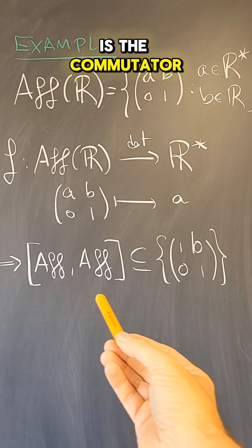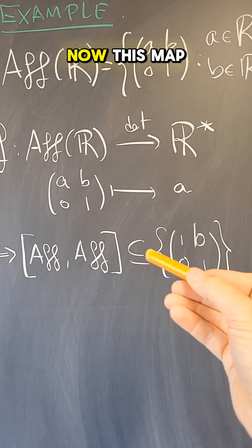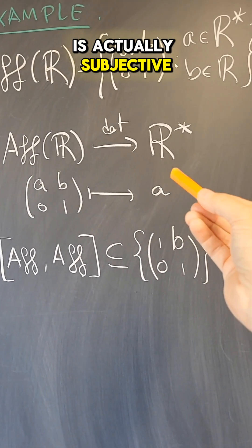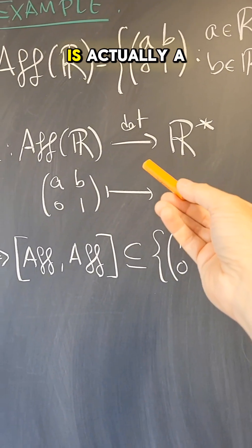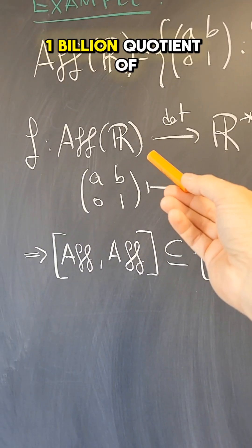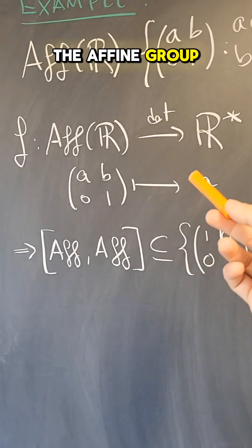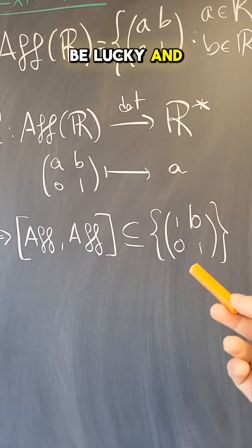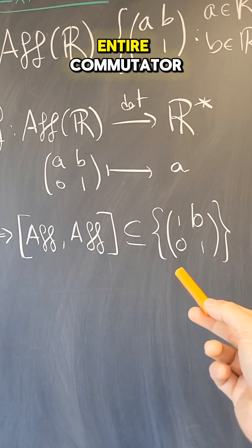And now the question is, is the commutator all of this? This map is actually surjective. So R star is actually a rather large abelian quotient of the affine group. So we might be lucky that this is, in fact, the entire commutator.